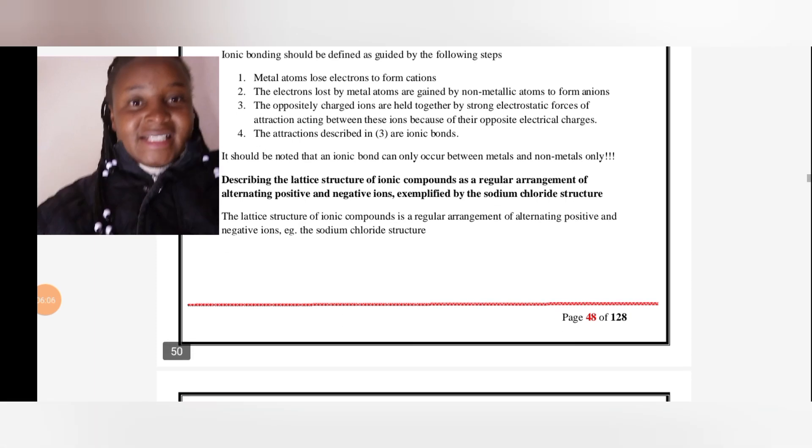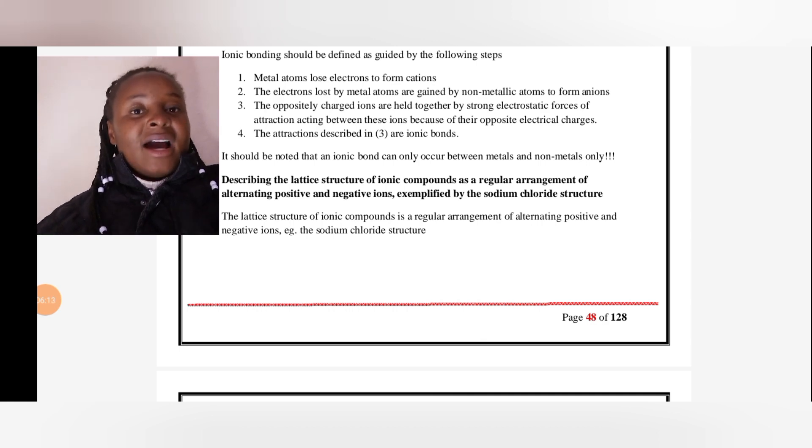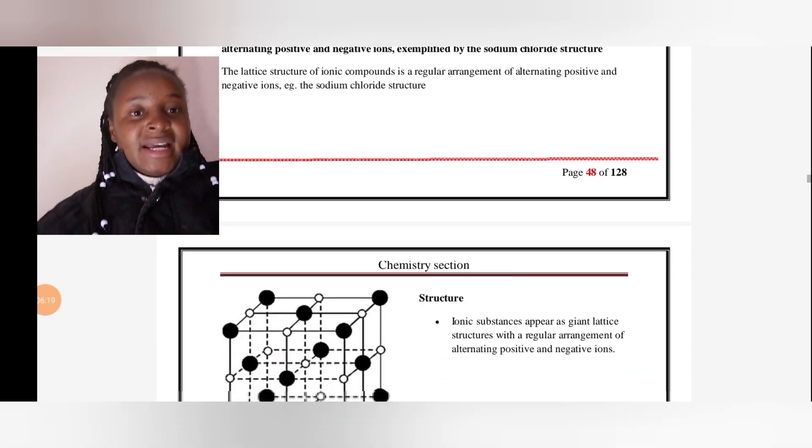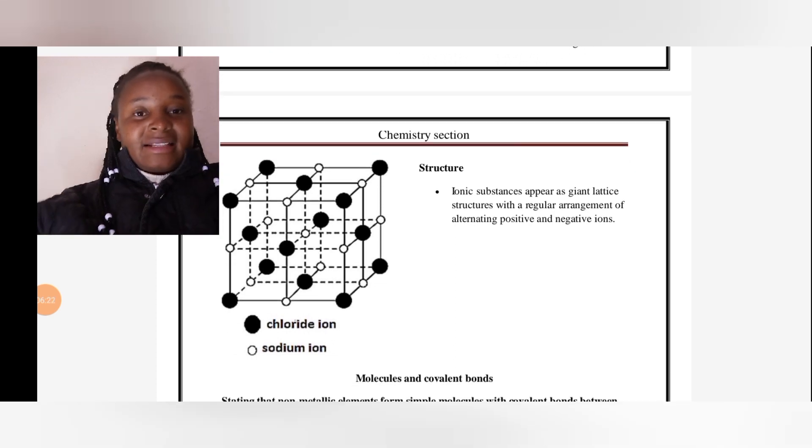We should be able to describe the lattice structure of ionic compounds as a regular arrangement of alternating positive and negative ions. An example is sodium chloride. The lattice structure looks like this: our chloride ions are the black ones, and the sodium ions are those tiny, clear, small circles. Ionic substances appear as giant lattice structures with the regular arrangement of alternating positive and negative ions.